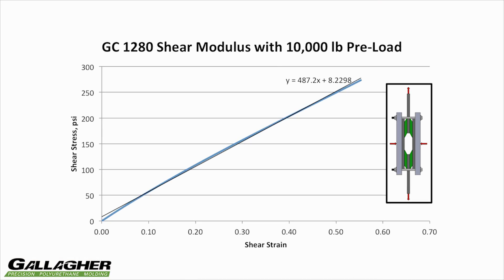As you can see from the resulting graph, the shear modulus measured with the 10,000 pound preload is approximately 490 psi. Since this is only a 4% increase over the shear modulus measured without the 10,000 pound preload, we can say that the principle of superposition is valid.